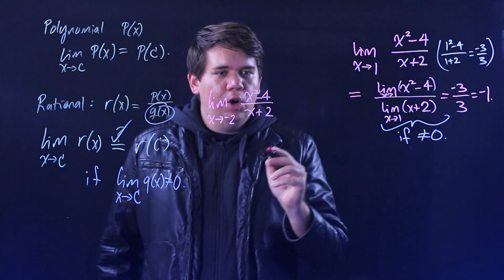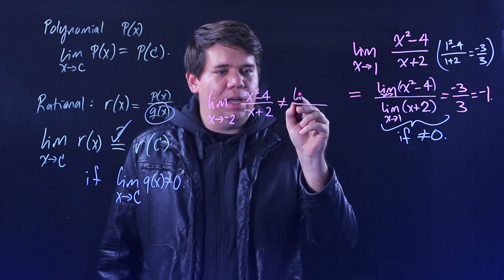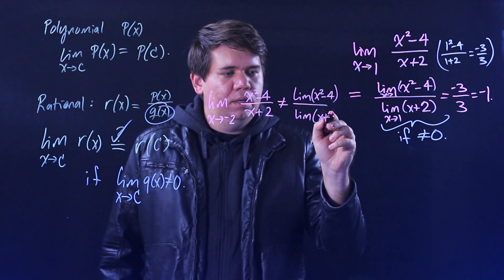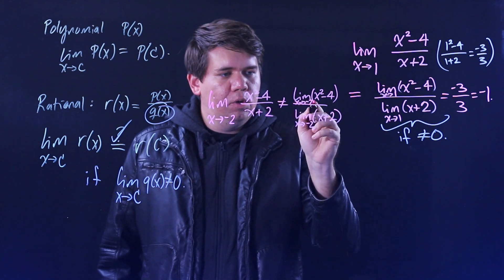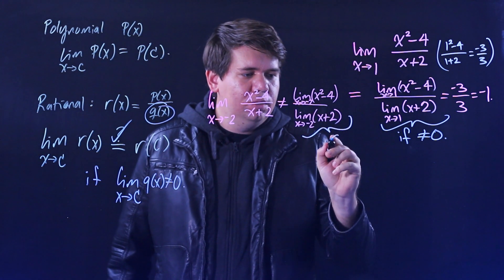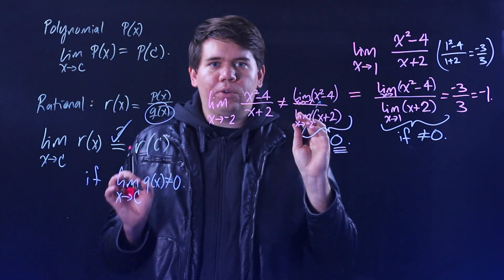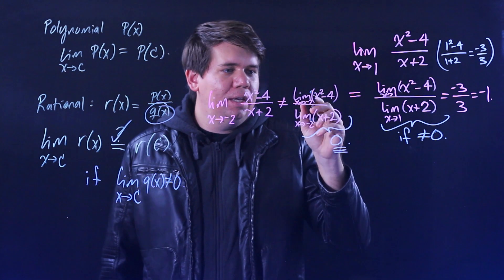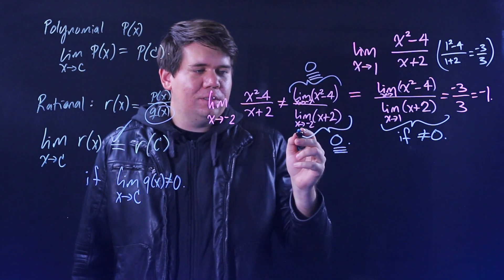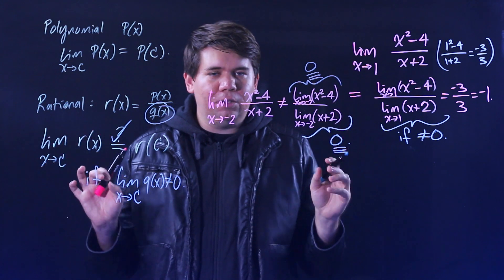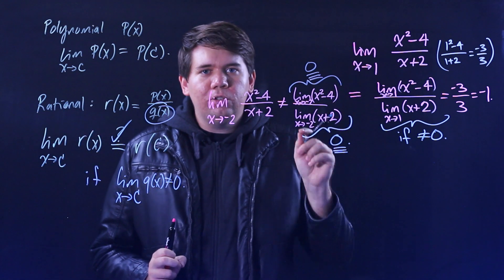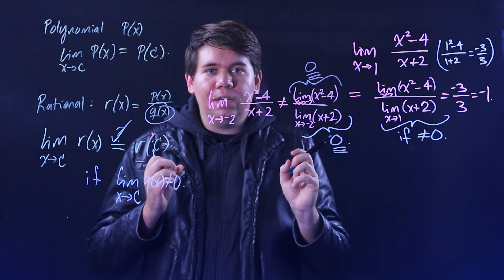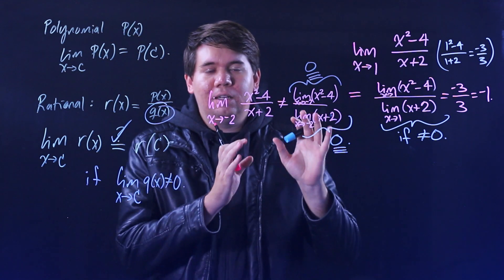We can't say it's simply going to be the limit of the top over the limit of the bottom, because the limit of the bottom is going to 0. We can't use the quotient limit law. If you notice, the top is also going to 0. So we end up in a situation where you have 0 divided by 0. This doesn't make sense mathematically — you can't divide by 0. You should take that as a flag, an indicator that you need to do some algebra.